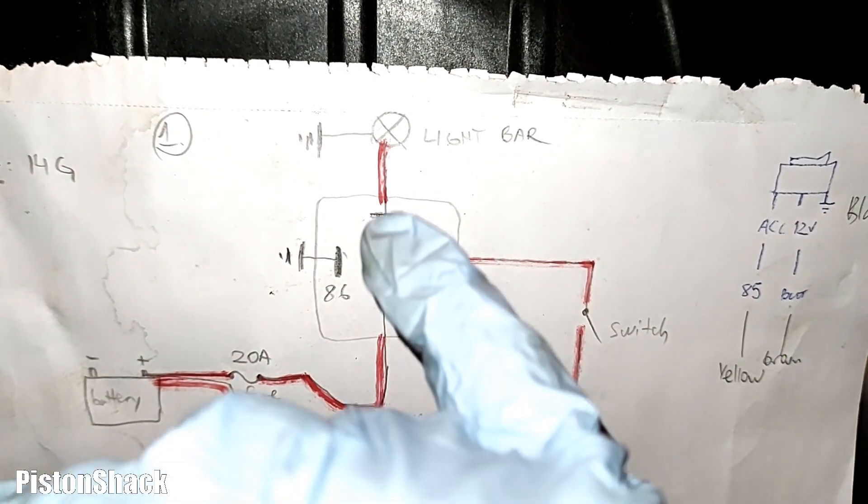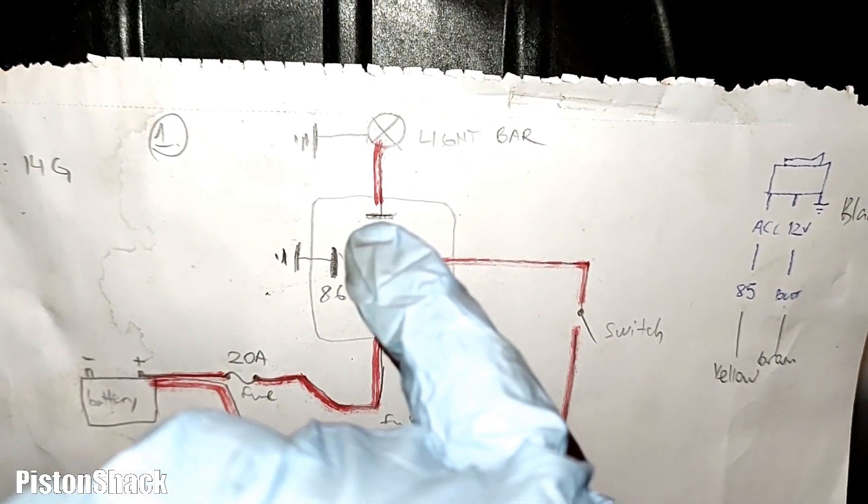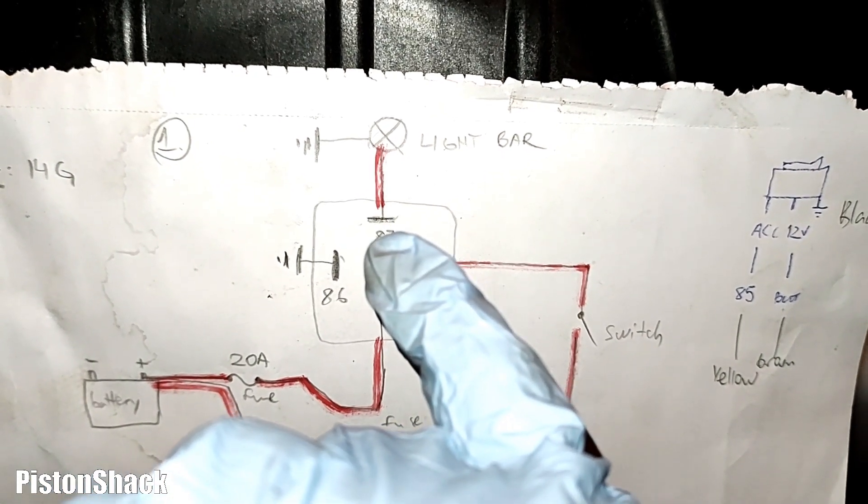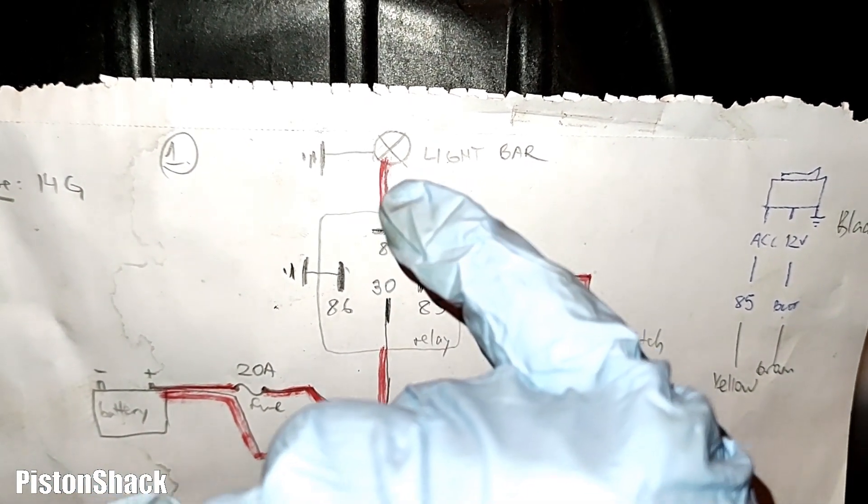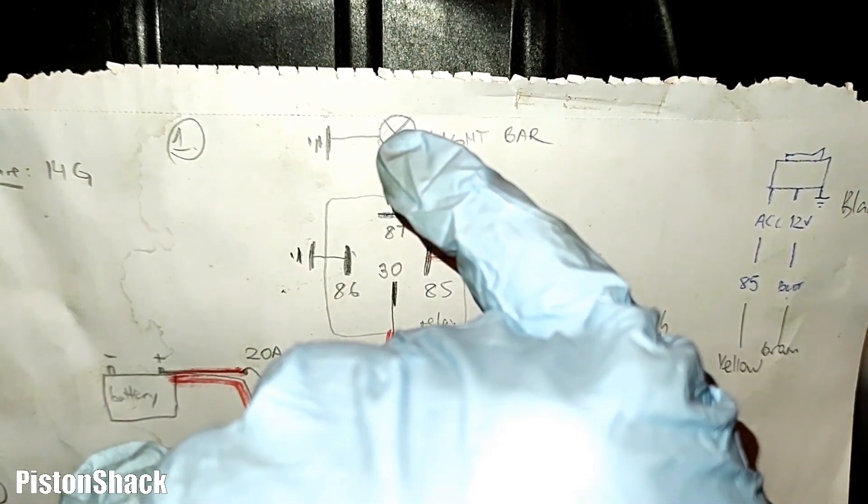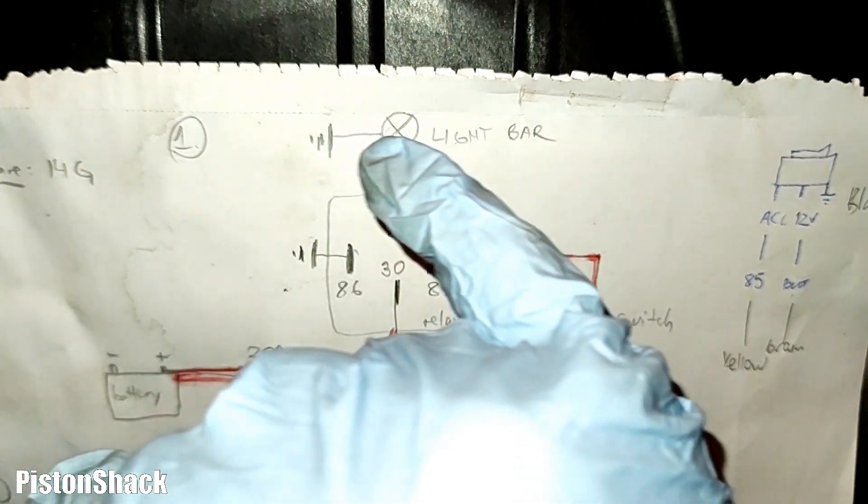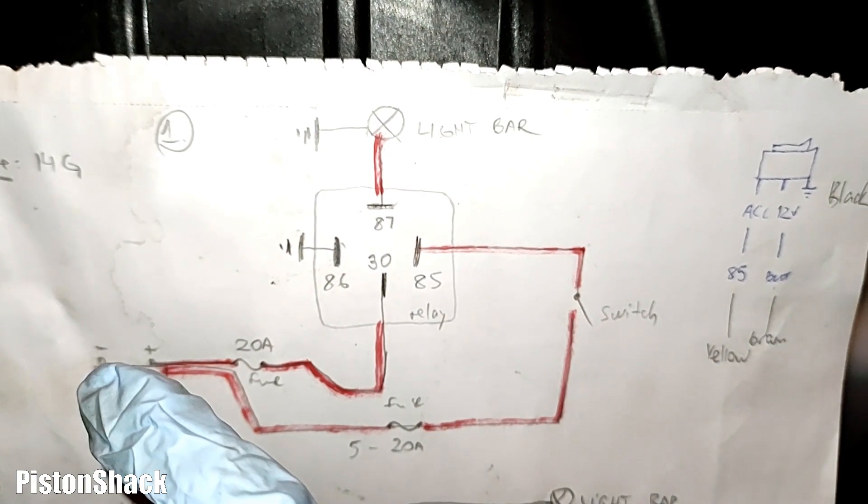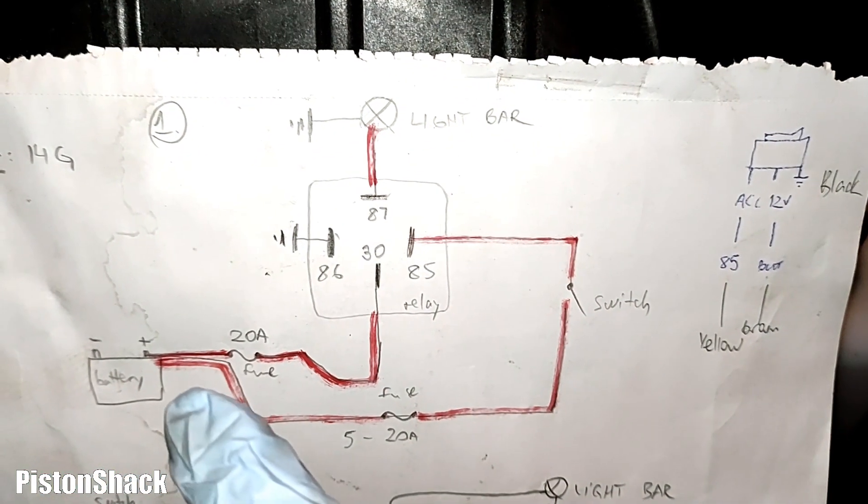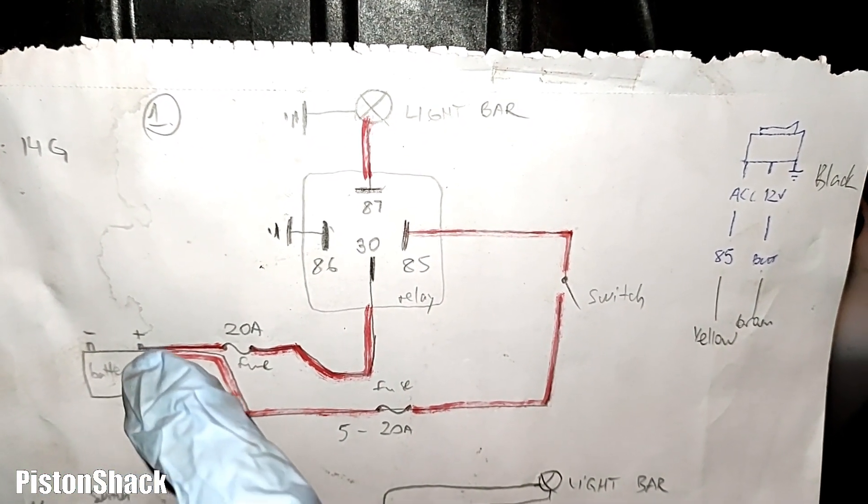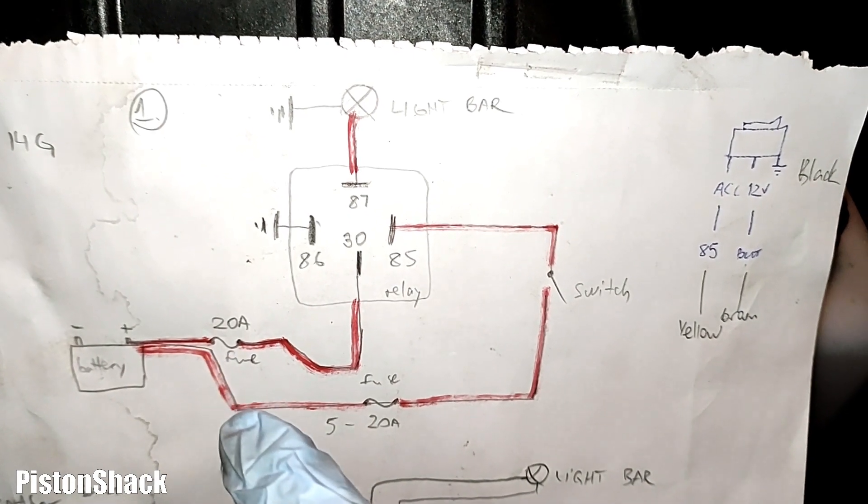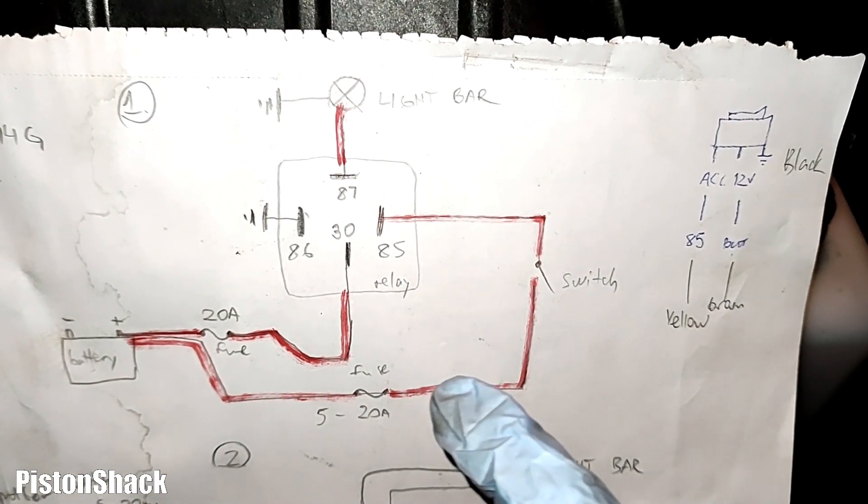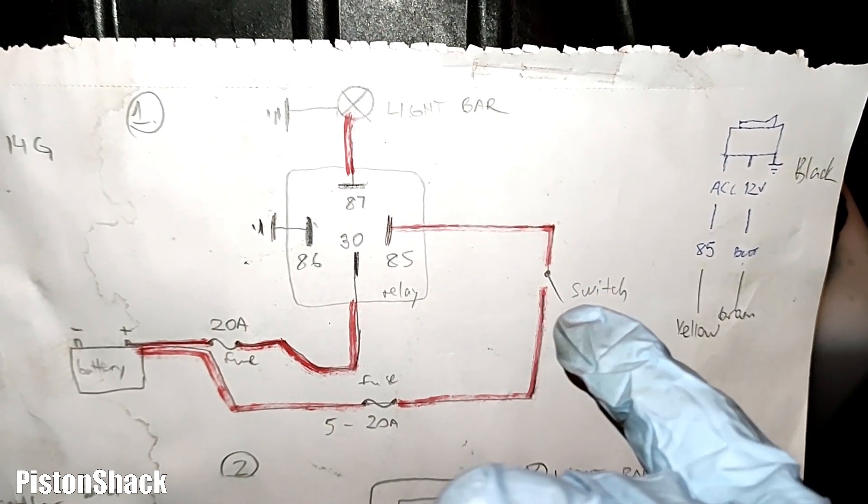You can see those thicker pins, and pin 87 is our output, and it's going to our light bar. The light bar is getting ground on the chassis, or you can take ground from the battery. Our control side: power from the battery through the fuse to the switch.